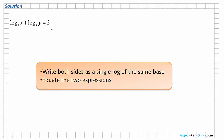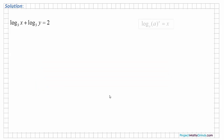Here we will need to convert the 2 to a logarithmic expression to the base of 3. From the laws of logarithms on page 21 of the log tables, any natural number can be written as the log of the base to the power of the natural number. So here we can write that 2 is equal to the log of 3 squared to the base of 3.